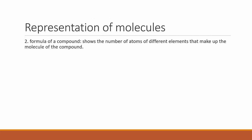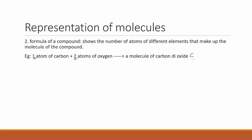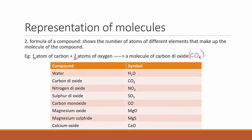Now let's see how to represent the formula of a molecule of a compound. One atom of carbon with two atoms of oxygen gives CO2 — carbon dioxide. Water has two atoms of hydrogen and one atom of oxygen: H2O. Nitrogen dioxide is NO2, meaning one nitrogen and two oxygen atoms. Sulfur dioxide is SO2 — one sulfur and two oxygen atoms.